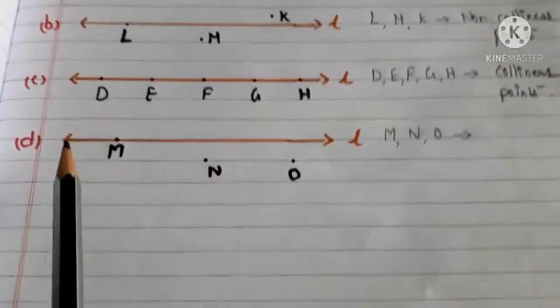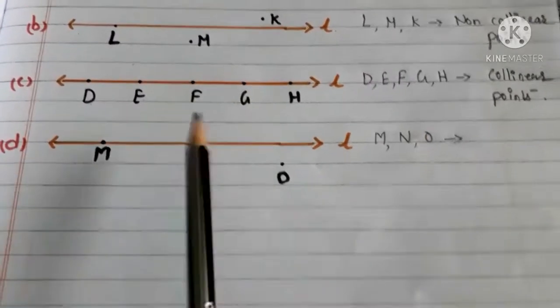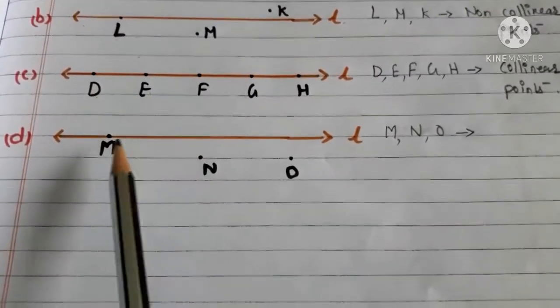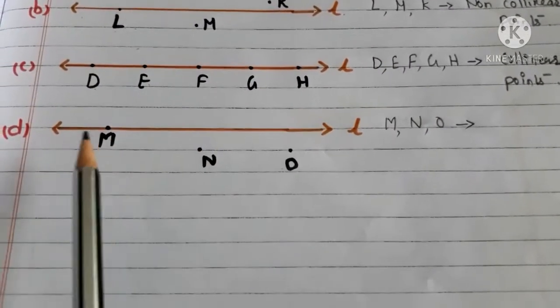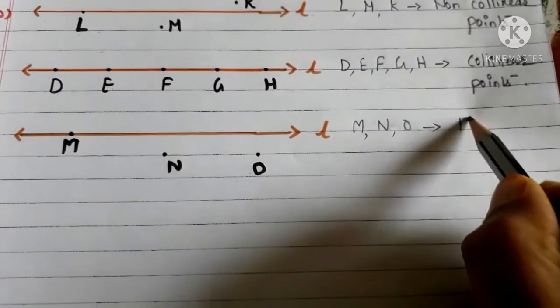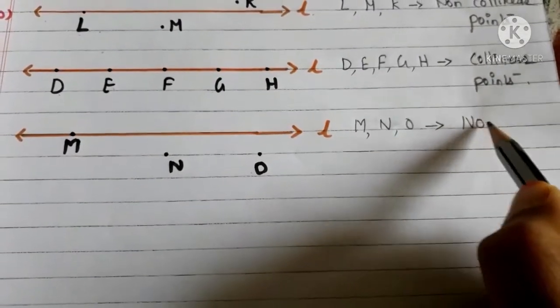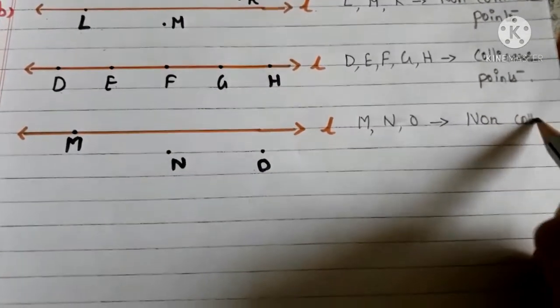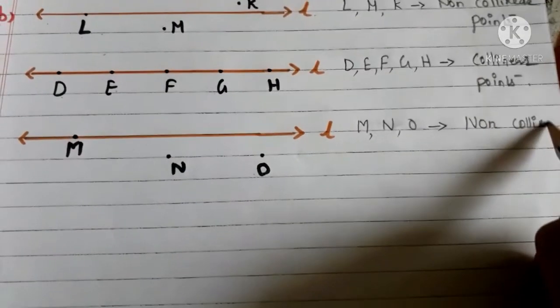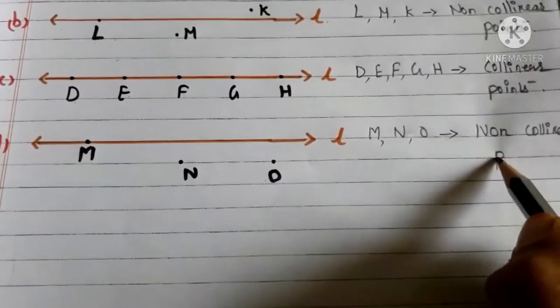Let us go to the last one. Here we have the line L again and the points M, N, O. The points M, N, O are not on the same line. So, M, N, O are non-collinear points.